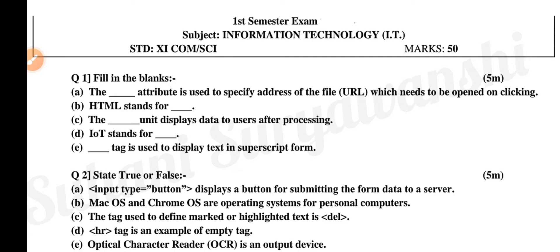So question number 1 aahe, fill in the blanks, 5 marks haa question aahe. A: the dash attribute is used to specify address of the URL file which needs to be opened on clicking. B aahe, HTML stands for. C aahe, the dash unit displays data to user after processing. D aahe, IoT stands for. E aahe, dash tag is used to display text in superscript form.